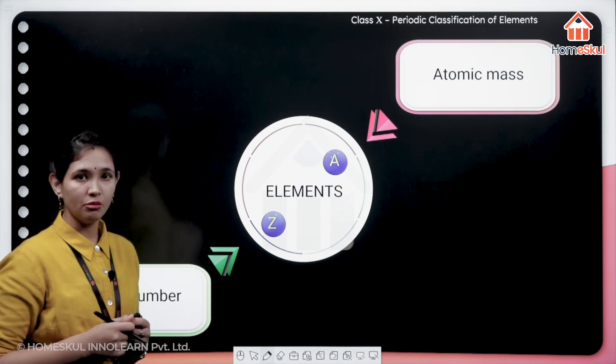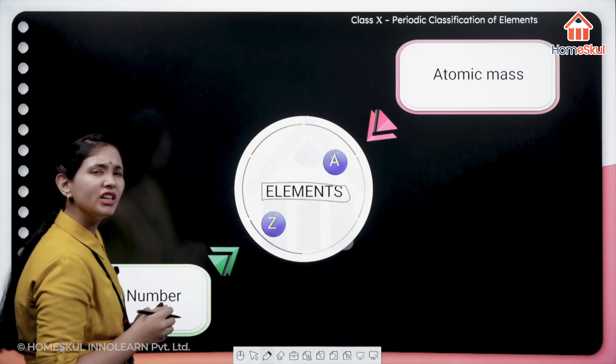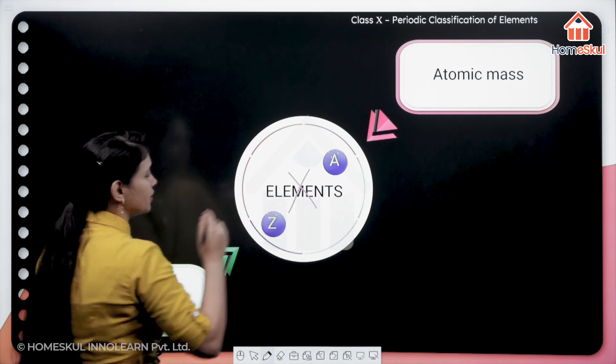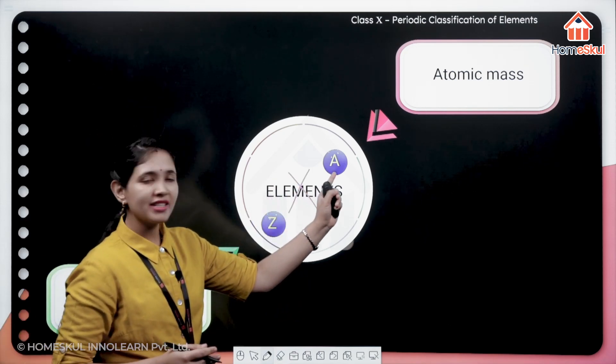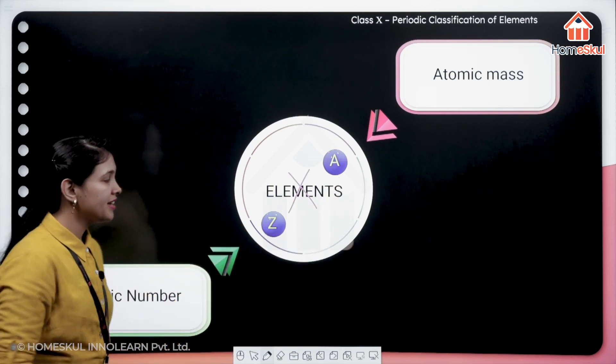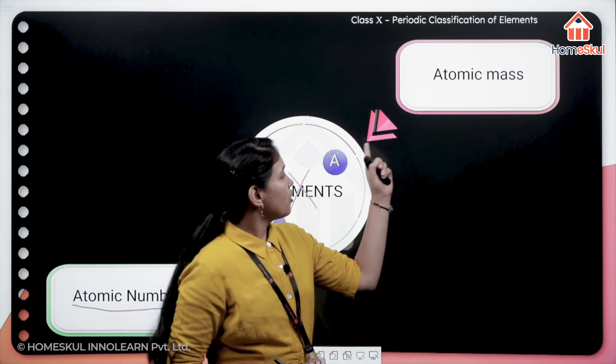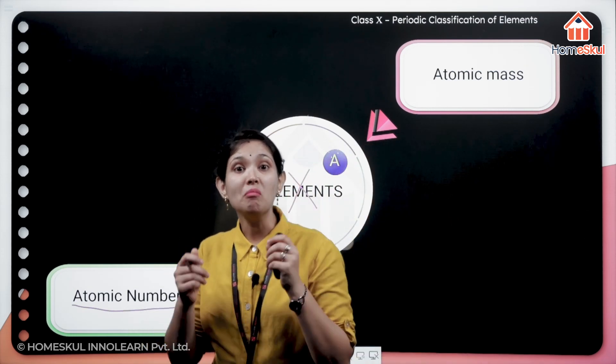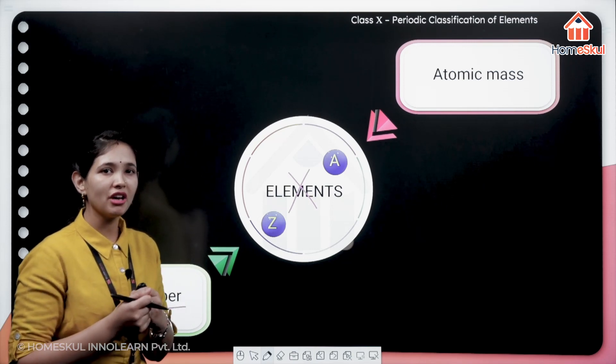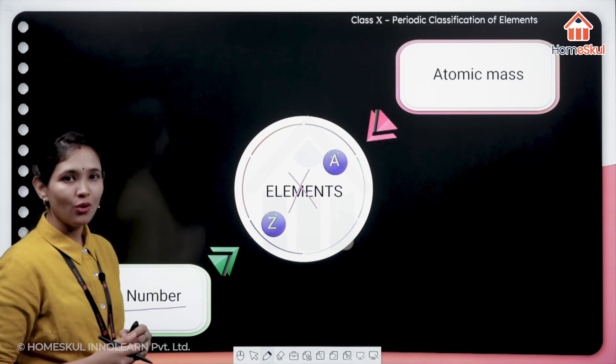Let's move ahead. How are we going to represent an element in the periodic table? We need to know that. Just see here, elements are written. It may be any element. I can write X here. And on the upper side you can see A written over there, and down below it's Z. Here Z is going to represent your atomic number and A is going to represent your atomic mass. So here Moseley has told us when I am going to classify the element, I am going to focus on the Z, not A.